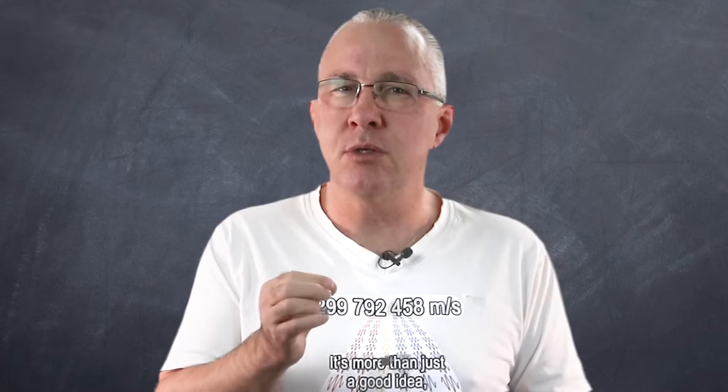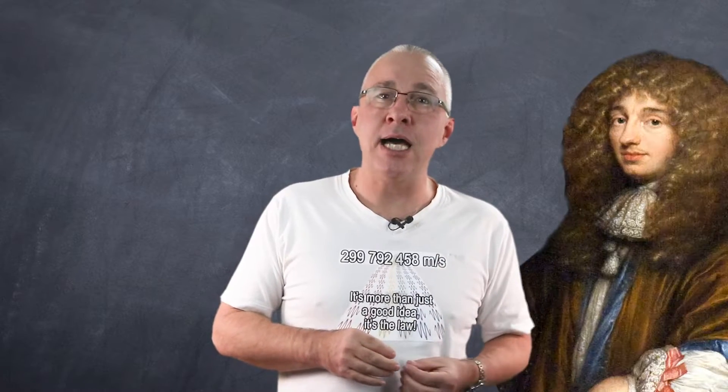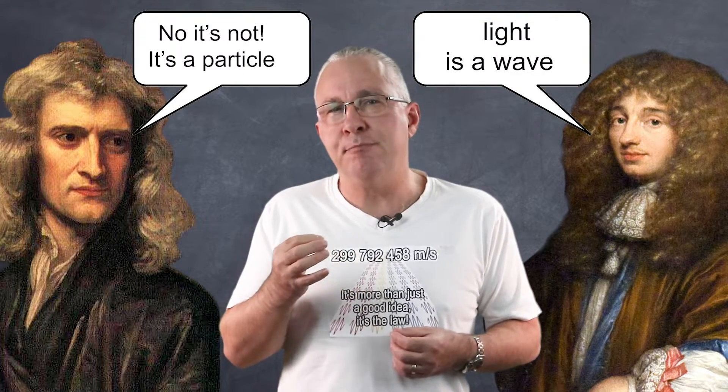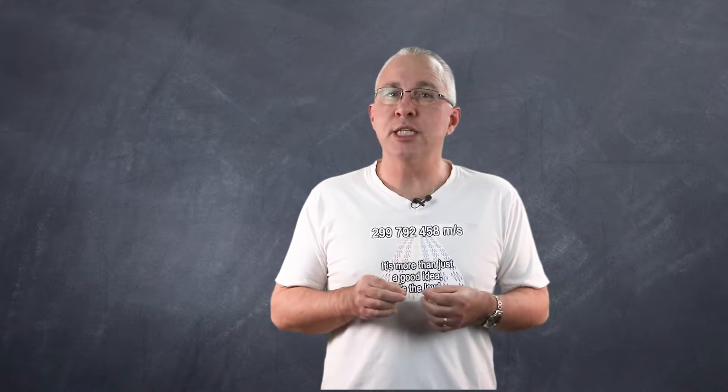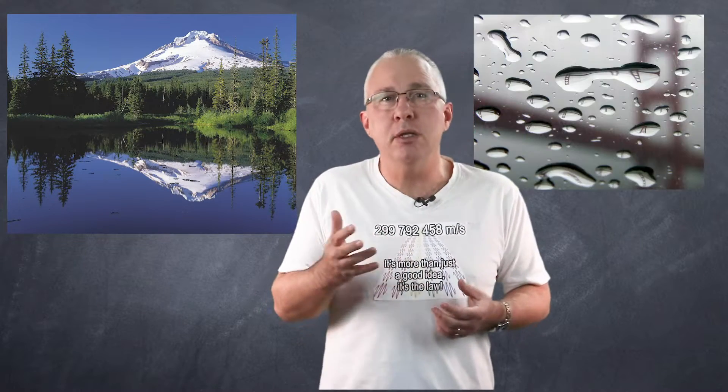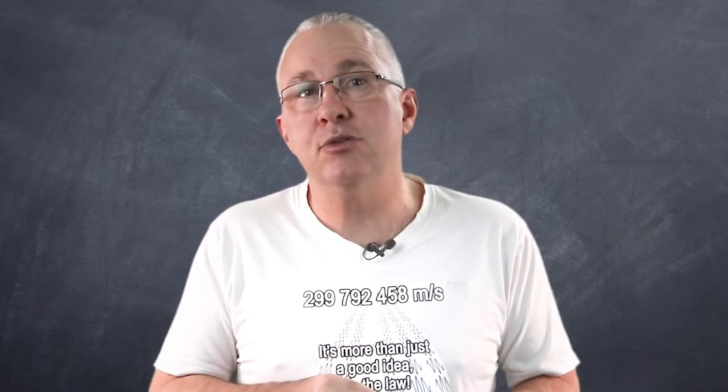But the question was, what was light actually made up of? Christian Huygens argued that light was a form of a wave. Isaac Newton, however, believed that light was actually made up of particles, which he called corpuscles. Both used their models to explain various behaviors of light, such as reflection, refraction, and polarization. I want to stress though, that what I'm presenting is not the real explanation of the behavior of light, but how these men believed it to be.